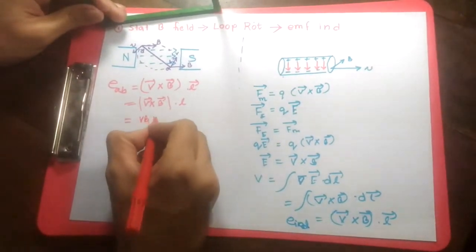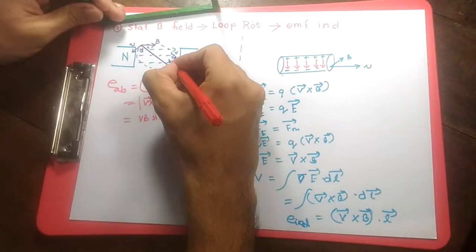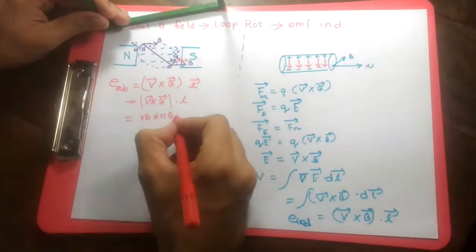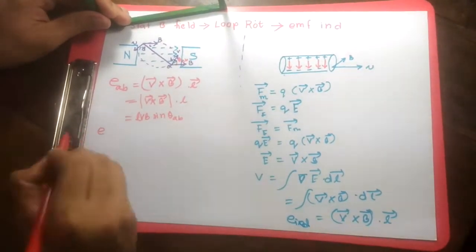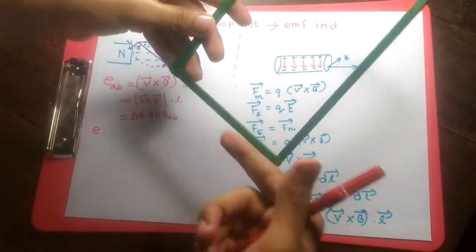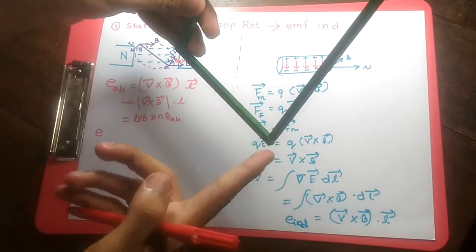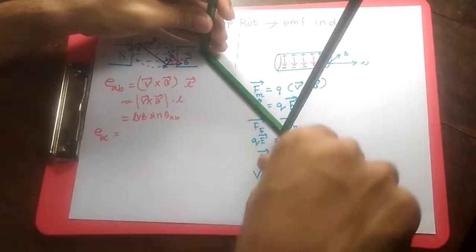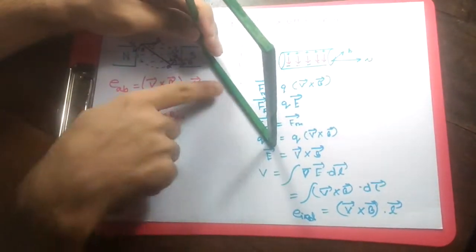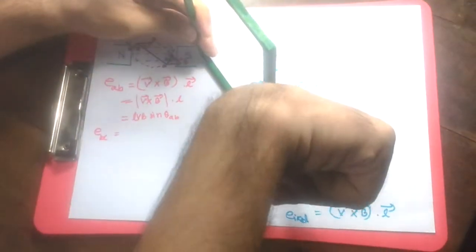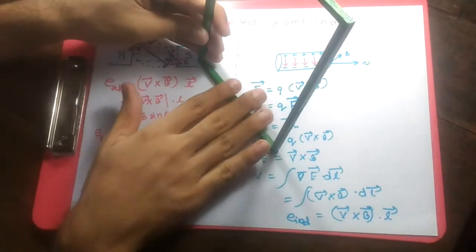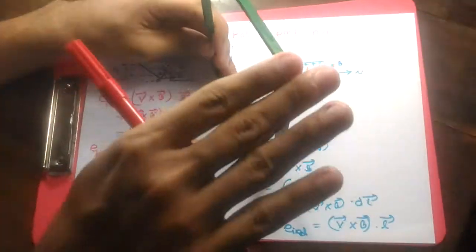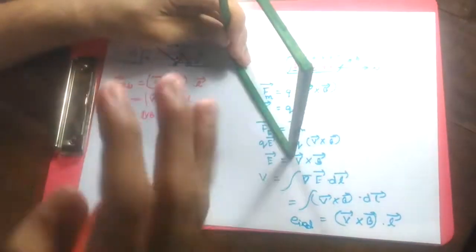For the B to C portion, the cross product V cross B is still in the downward direction but is orthogonal to L — the cross product is in the Z direction while L is in the XY plane — so there will be no induced EMF in that segment. For the same reason, the induced EMF in the top portion (from the top view) is also zero.